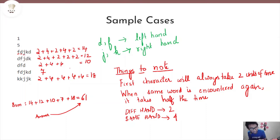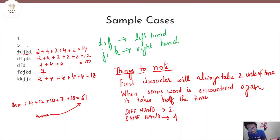The third character is J, written using the right hand, while the previous character D was written using the left hand — different hands, so plus 2. The fourth character is K, written using the right hand, and the previous character J was also written using the right hand — same hand, so plus 4. The last character D was written using the left hand while K was written using the right hand — different hands, so plus 2. Total: 2 + 4 + 2 + 4 + 2 = 14 units of time for the first word.